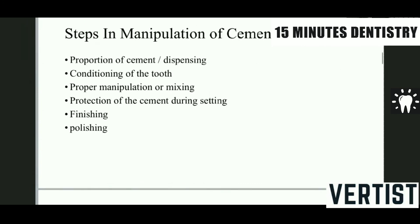Regarding manipulation of cement: irrespective of which cement is selected, there are different ways to mix and manipulate it. Zinc oxide eugenol can be mixed with a glass slab and a stainless steel spatula. Zinc phosphate must be mixed in small increments over a larger area of the glass slab so that the exothermic heat is absorbed by the glass surface, giving more working time. Glass ionomer requires a plastic spatula so as not to abrade the stainless steel spatula and contaminate the mix. After proper mixing, the cement must be protected during setting with proper isolation to avoid salivary contamination, and once set, it should be finished and polished before proceeding to the final restoration.